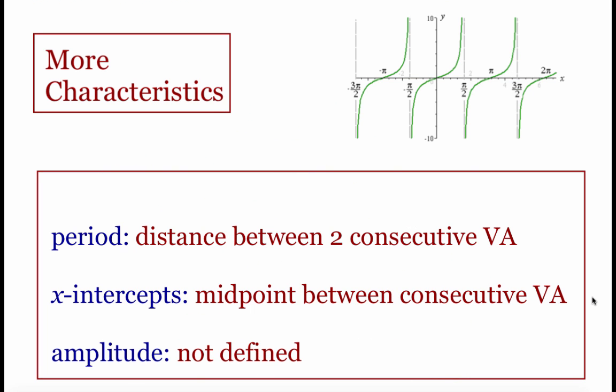A few last characteristics: the period for a tangent graph is the distance between the two asymptotes. There will be an x-intercept directly in the middle between the asymptotes. And there is no defined amplitude for tangent equations, because they go from negative infinity to positive infinity.